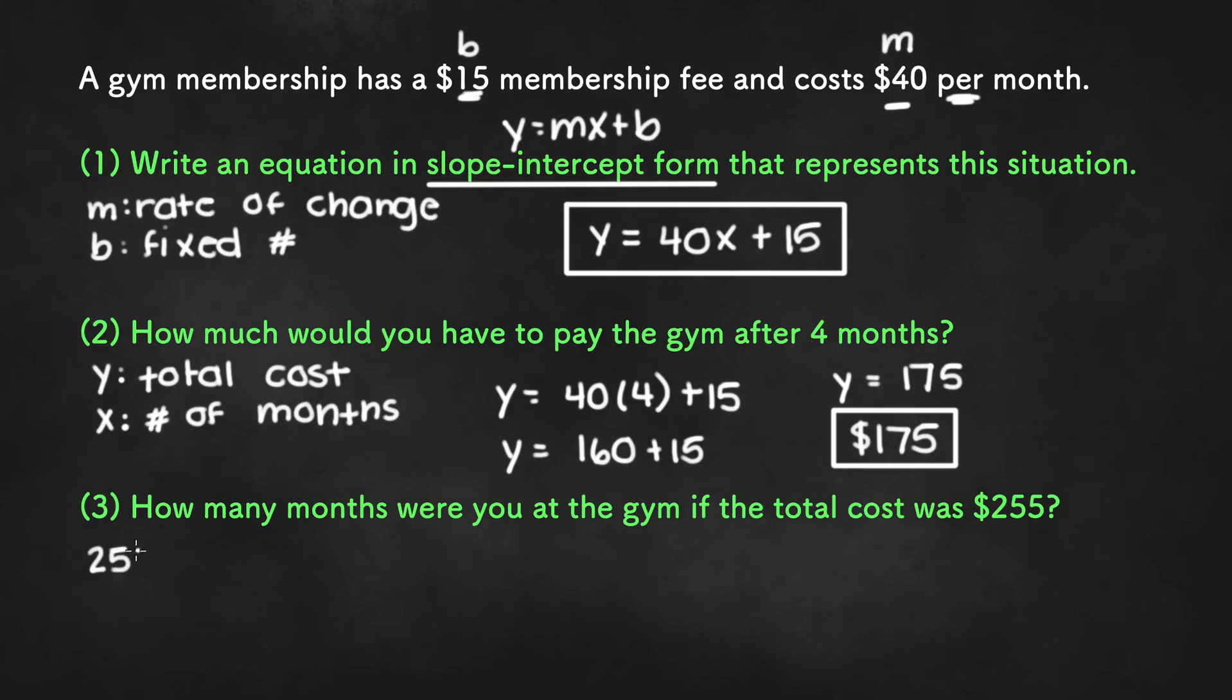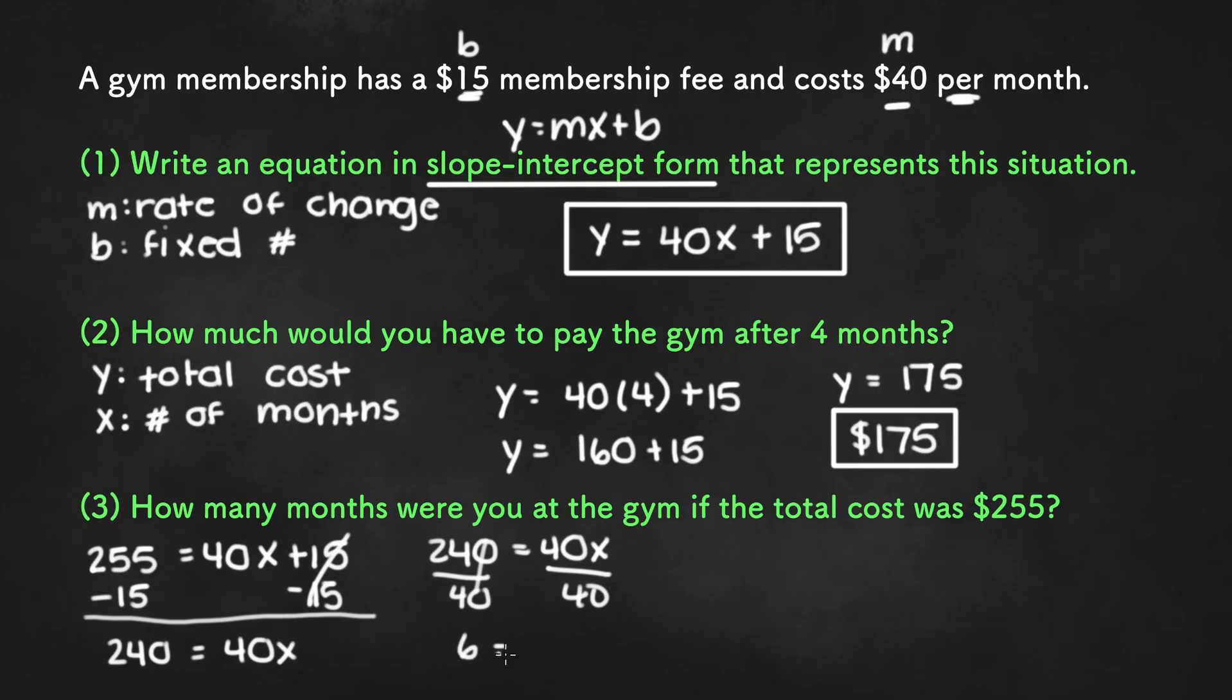So if we do that, we'll get 255 equals 40x plus 15. We can subtract both sides of the equation by 15 to get 240 equals 40x. I'm just going to rewrite the equation right over here so we have more space. We can divide both sides by 40, and we're left with 240 divided by 40 which is 6, and 6 equals x.